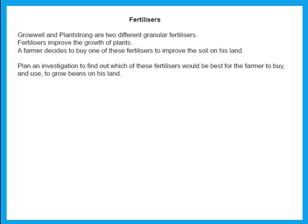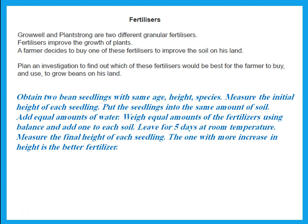This is an experiment. Grow Well and Plant Strong are two different fertilizers. A farmer decides to buy one to improve the soil. To investigate which is best, we use two bean seedlings of the same age, same height, same species. Measure the initial height of each seedling, put them in the same amount of soil, add equal amounts of water, and weigh equal amounts of fertilizer using a balance — add one to each soil. Leave for five days at room temperature. Measure the final height of each seedling. The one with more increase in height indicates the better fertilizer.